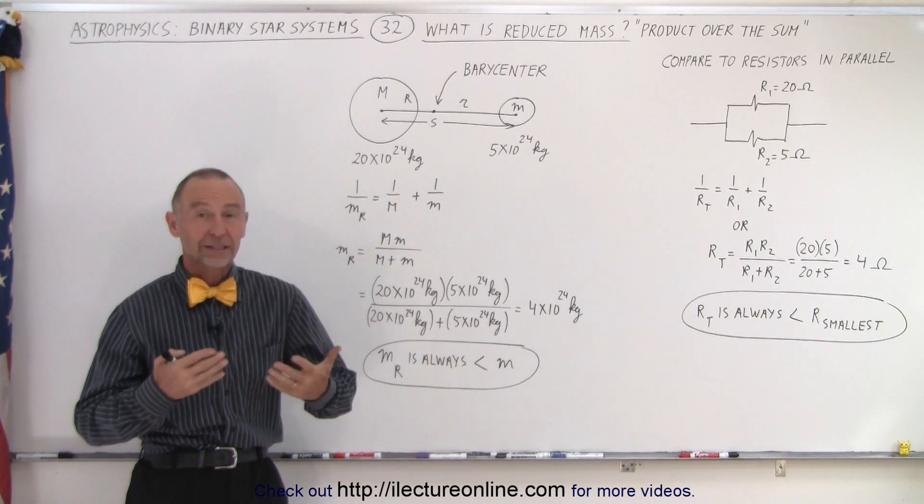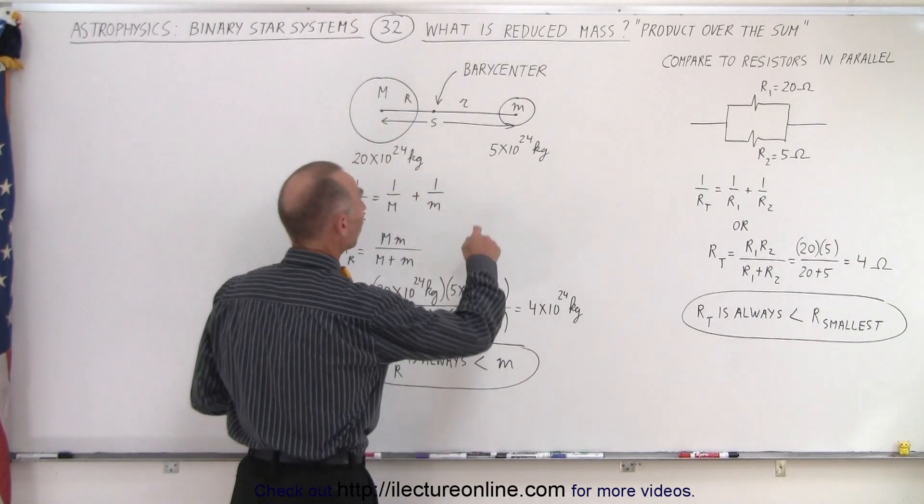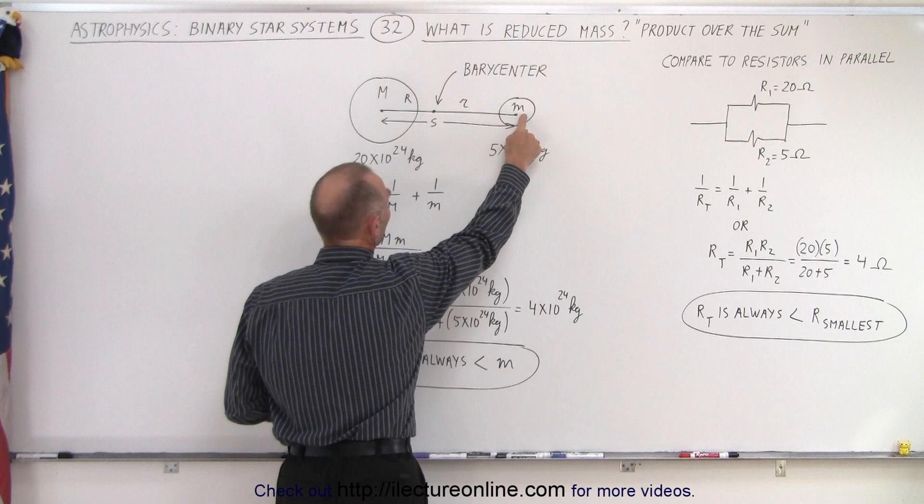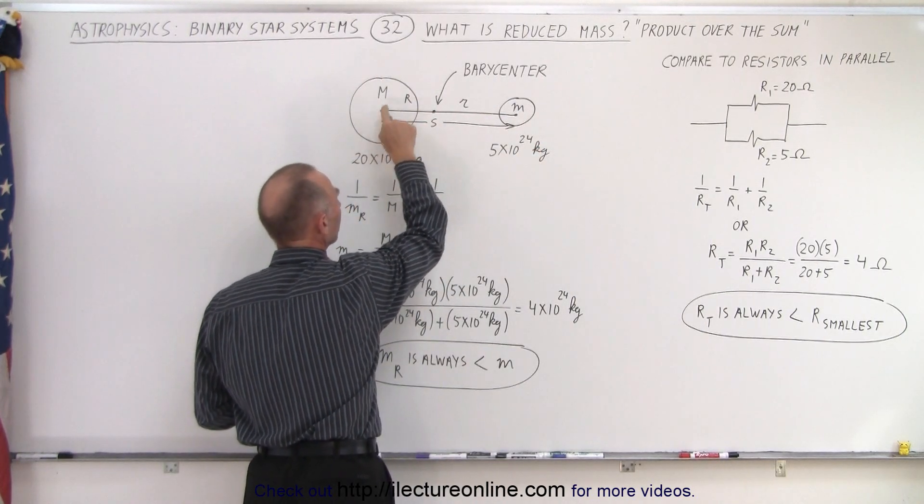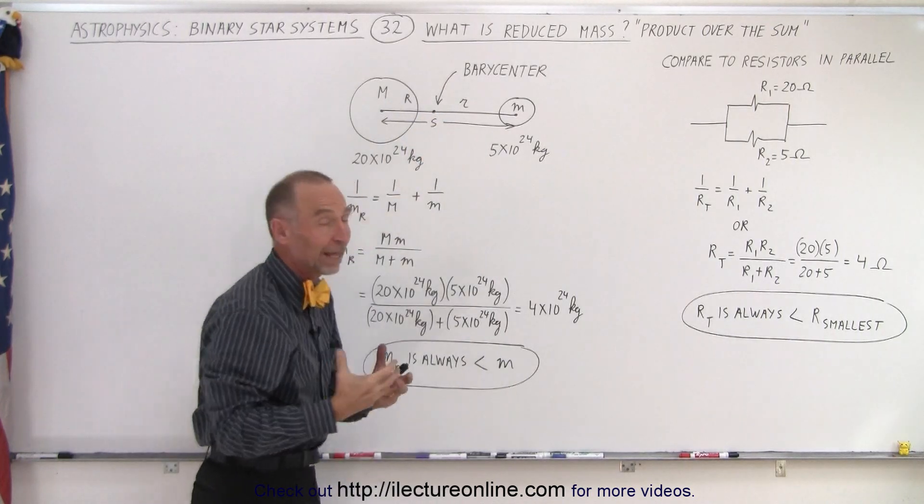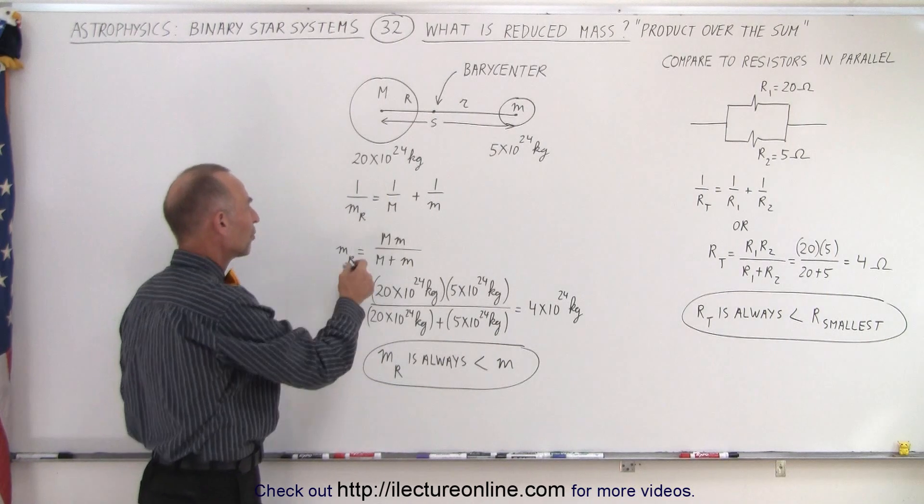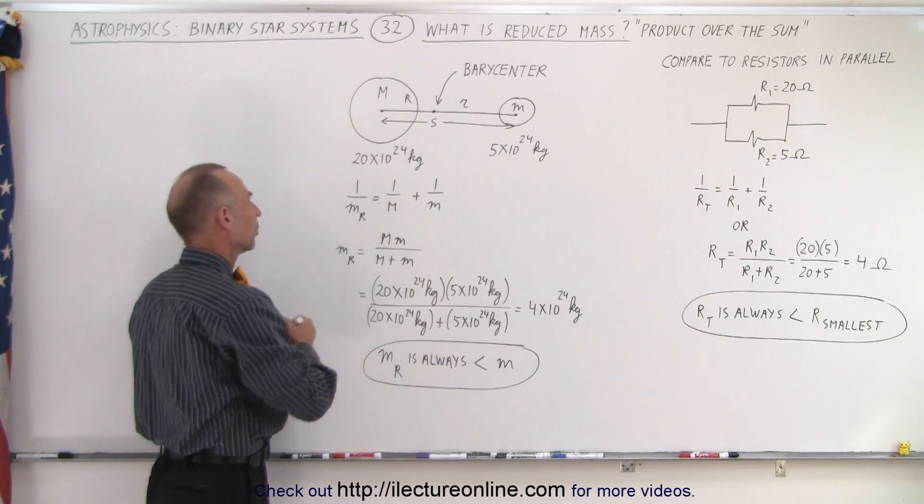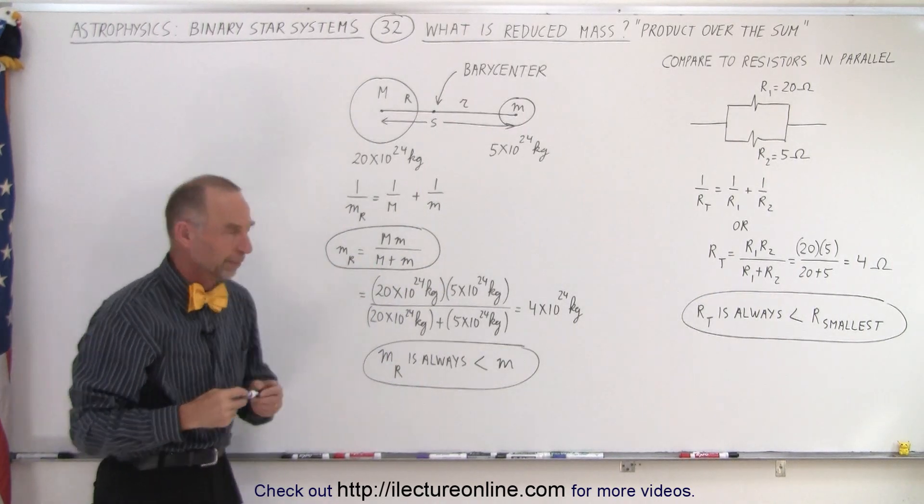On the previous video we saw that it was necessary to compensate for the fact that small objects, small stars revolving around larger stars do so not around the center mass of the large star but around the barycenter, and for that we need to calculate the reduced mass. And we realized that the equation for reduced mass is right here where we have the product over the sum of the mass of the large and the small star.